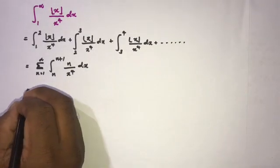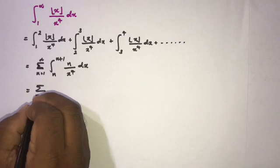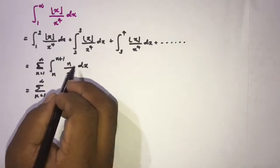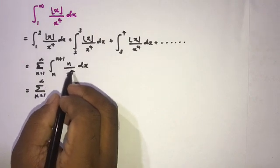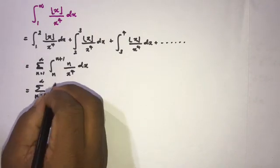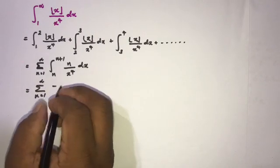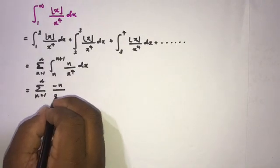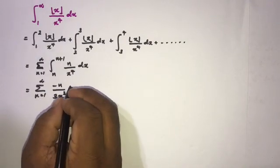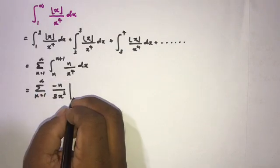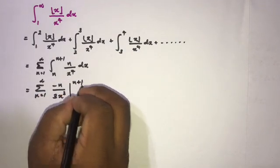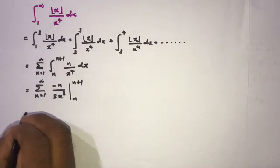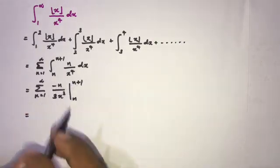Now we can integrate. Since n is a constant, we integrate n/x⁴ to get minus n over 3x³, evaluated from n to n+1. So we have the infinite sum from n equals one to infinity of minus n over 3x³ evaluated from n to n+1.